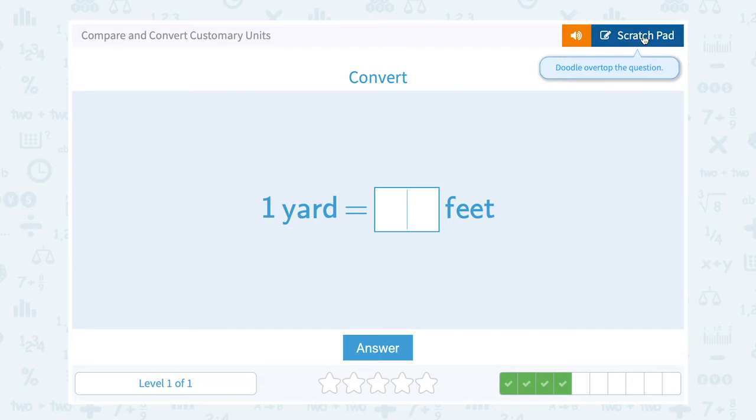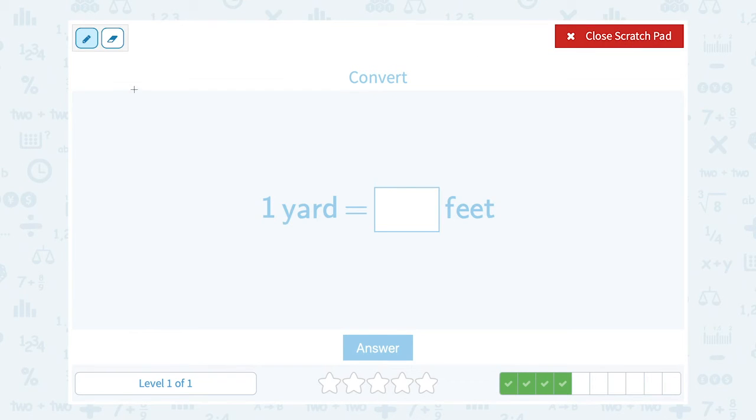Let's take a look at this one. We know that we said one yard was equal to 36 inches, and we also said that one foot was equal to 12 inches. So each 12 inches is one foot.